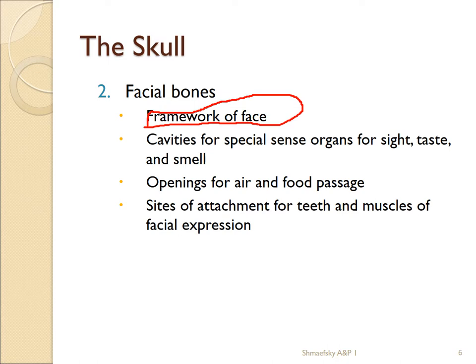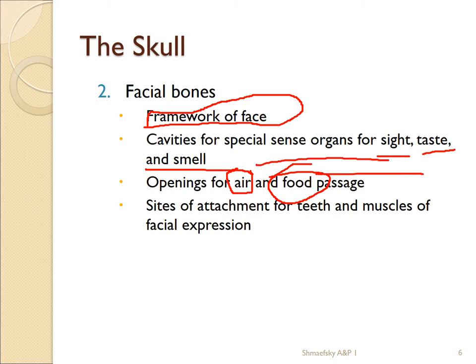Facial structure varies with age, and the facial bones give us the ability to recognize family members — it varies genetically and ethnically. Facial bones also house cavities for special senses: the ocular or optic cavity for sight, the oral cavity for taste, and the nasal cavity for smell. These cavities also play a role in air exchange and are attachment sites for teeth.